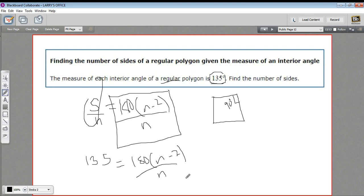So how are we going to solve this for n? Again, we've got two n's in here, one's on the bottom of a fraction, one's inside parentheses on the top of a fraction. I think the first thing I would do is multiply both sides by n. So I would get 135n equals 180 times n minus 2.